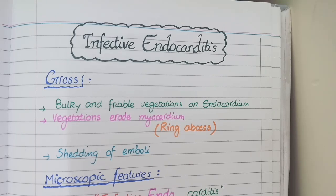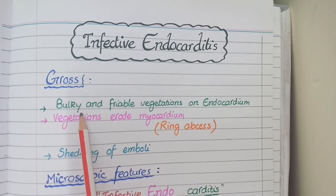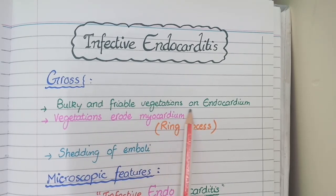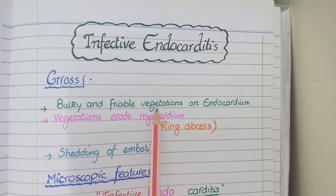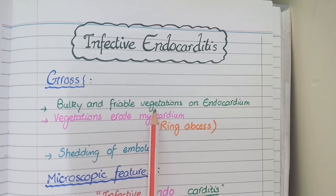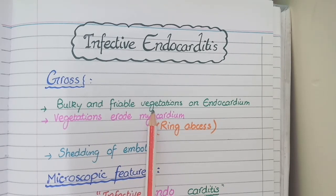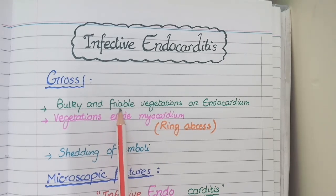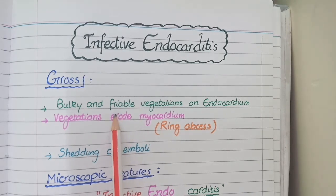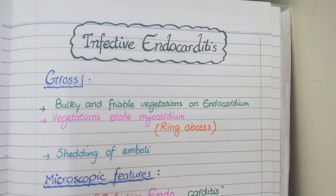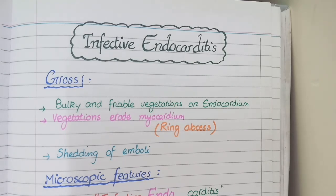On the gross specimen of a heart affected with infective endocarditis, you will see bulky and friable vegetations on the endocardium. Vegetations are platelet aggregates or depositions, and friable means they are not tightly bound to the endocardium. Rather, they move to and fro with the pressure of flowing blood, which increases the tendency of being broken and embolization.